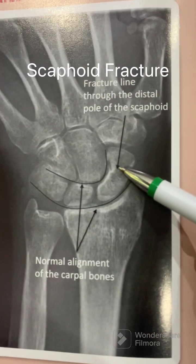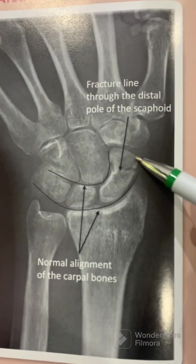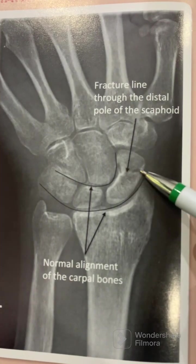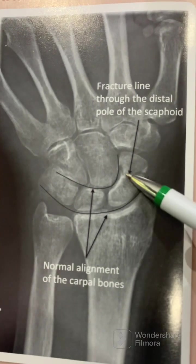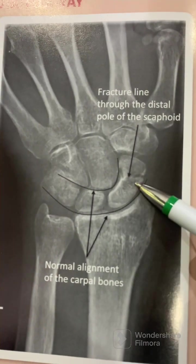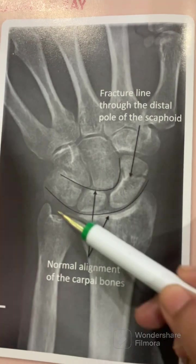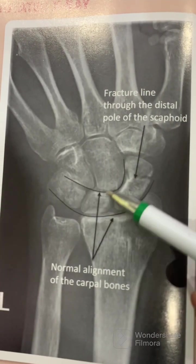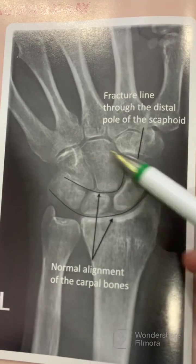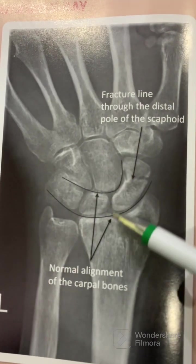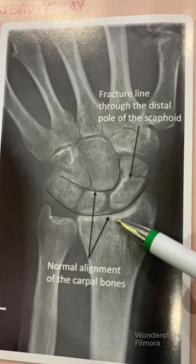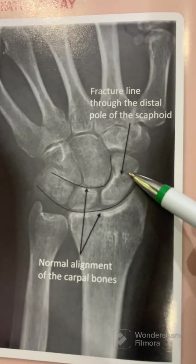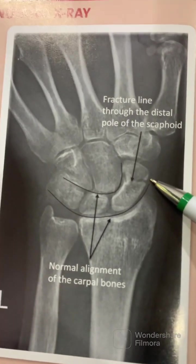This is the fracture line to the distal pole of the scaphoid, as shown in this picture. Here is the fracture line. If we look at the other bones, the alignment is normal — normal alignment of the carpal bones is present, with the fracture to the distal pole of the scaphoid.